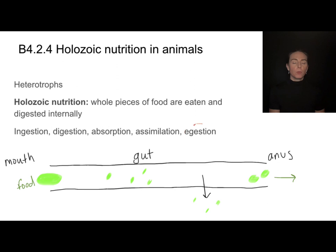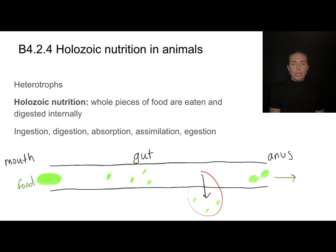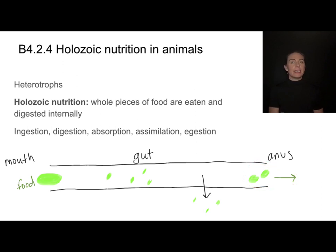The one word I haven't touched on yet is assimilation — that means the absorbed molecules becoming part of the cells and tissues. So to summarize holozoic nutrition: ingestion, digestion, absorption, assimilation, and then egestion of any waste that cannot be digested or absorbed.